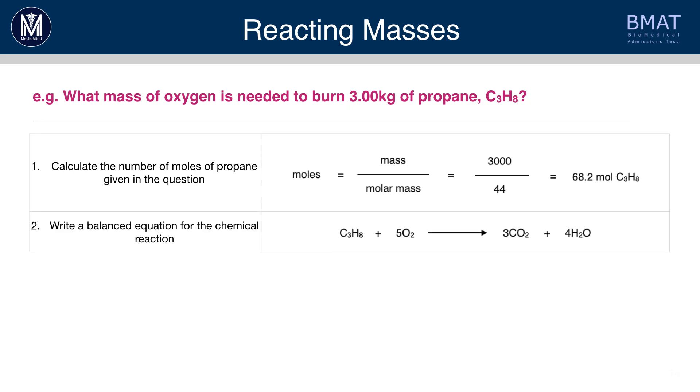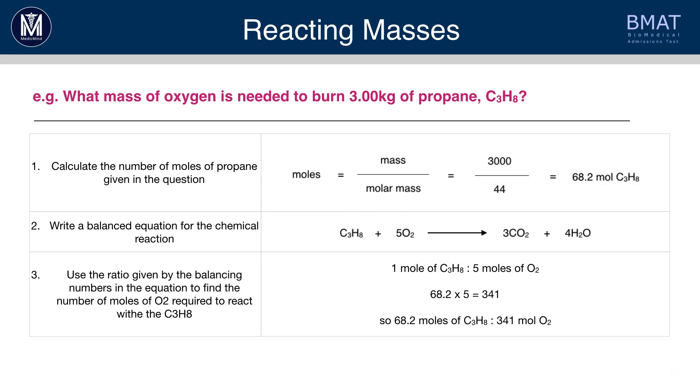Next, write a balanced equation for the chemical reaction. This balanced equation tells us that one mole of propane reacts with five moles of O2. Therefore, we can see that if there are 68.2 moles of propane involved, then we need five times as many moles of O2.